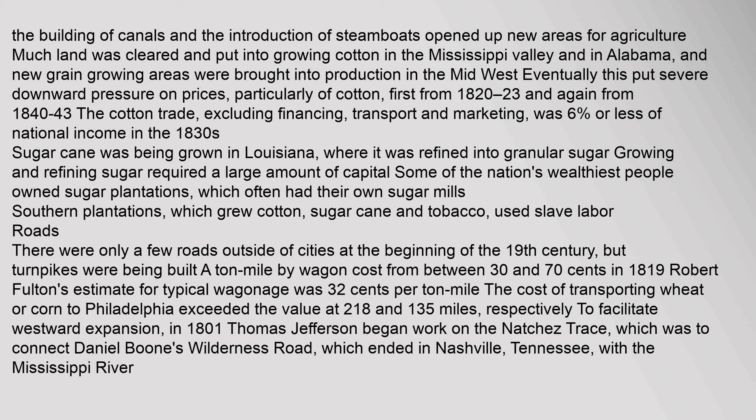The U.S. economy was primarily agricultural in the early 19th century. Westward expansion, the building of canals, and the introduction of steamboats opened up new areas for agriculture. Much land was cleared and put into growing cotton in the Mississippi Valley and Alabama, and new grain-growing areas were brought into production in the Midwest. This eventually put severe downward pressure on prices, particularly of cotton, first from 1820 to 1823 and again from 1840 to 1843. In the 1830s, sugar cane was being grown in Louisiana, requiring large amounts of capital. Southern plantations, which grew cotton, sugar cane and tobacco, used slave labor.